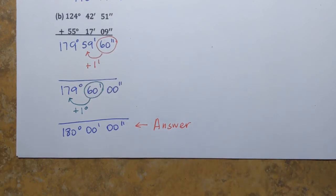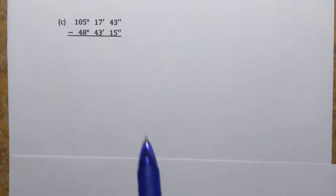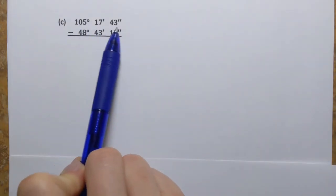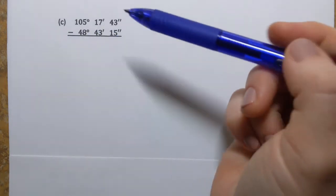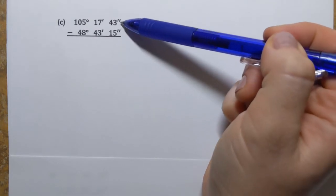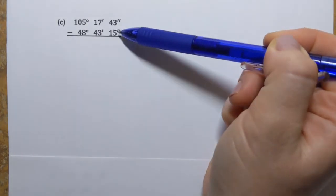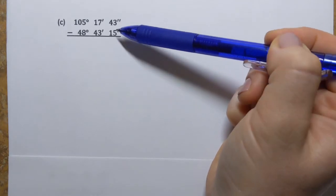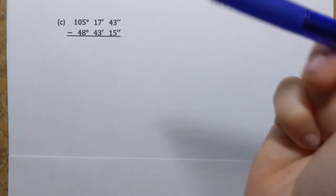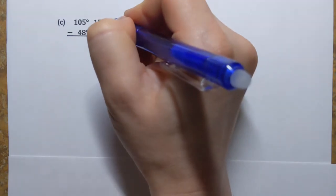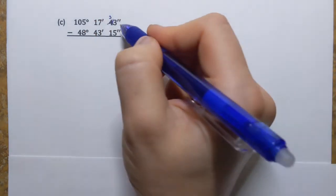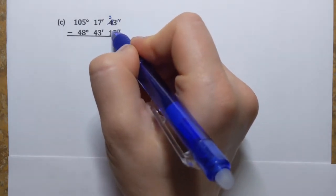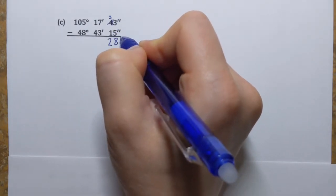Now let's try subtracting. We have two angle measures in DMS format to subtract. We align them vertically and start from the right. Subtracting seconds: 3 minus 5 — I have to borrow, so it's 13 minus 5, which is 8; then 3 minus 1 is 2. That gives 28 seconds.